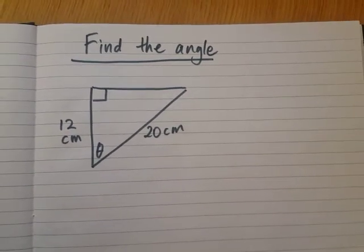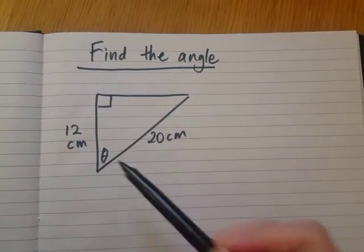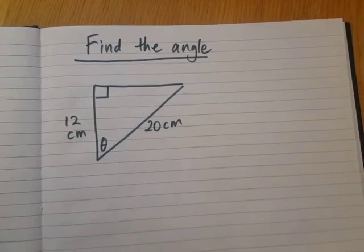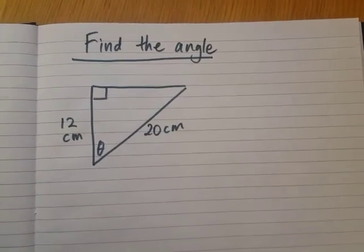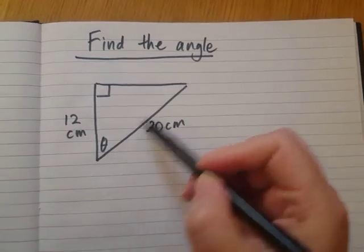Hi, everyone. In this video, we're going to find the angle theta in this triangle here. So first thing always is we're going to label the sides. So let's start with the hypotenuse. That's the longest side, which is this one.